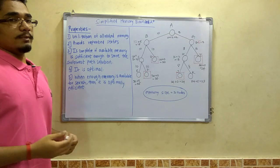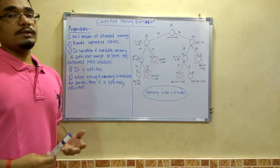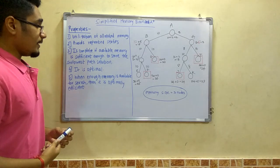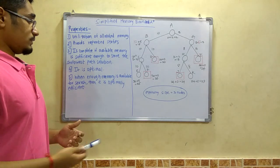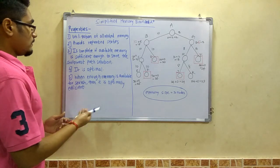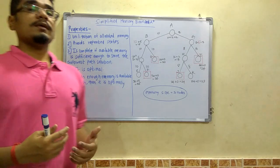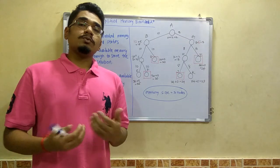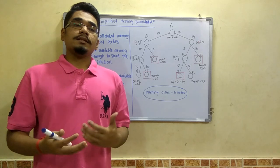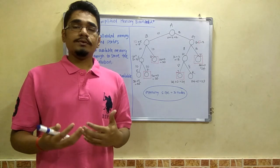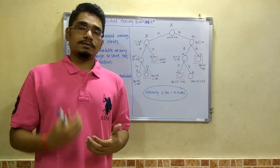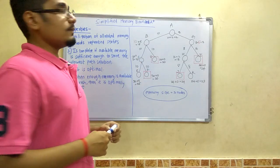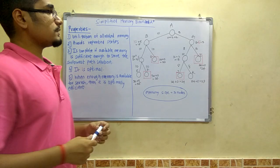Next, SMA* is optimal — it is very optimal compared to A*. When enough memory is available for a search, it is optimally efficient. If we have a tree that needs to be searched entirely, SMA* is very efficient in solving that search tree. Now we will look at a problem based on the SMA* algorithm.